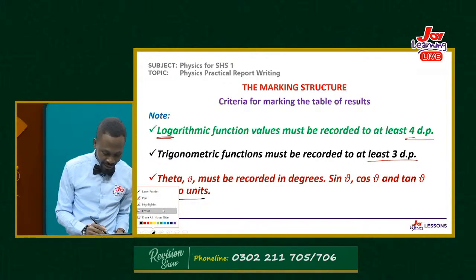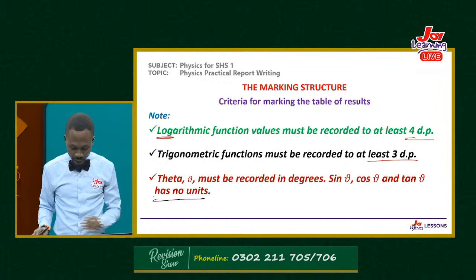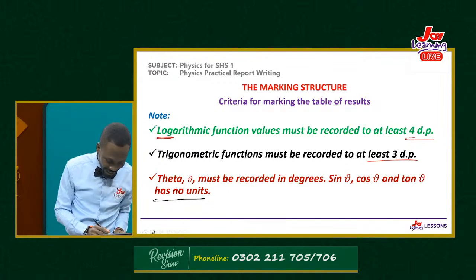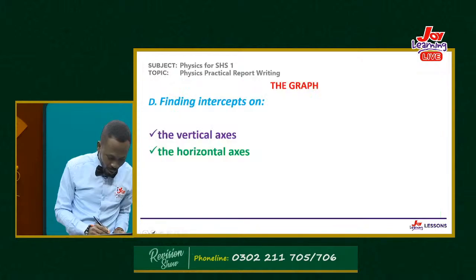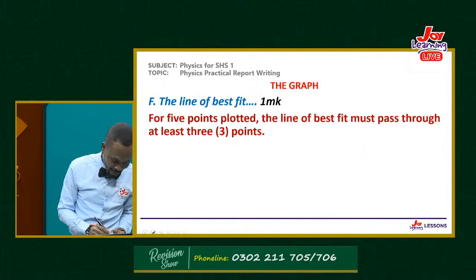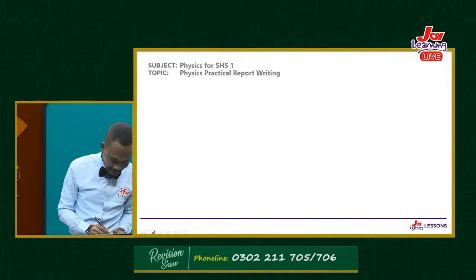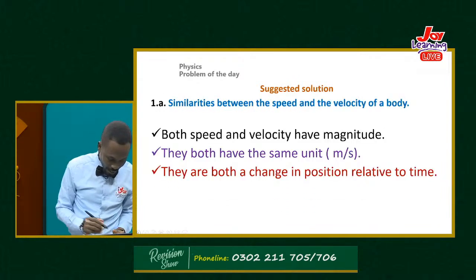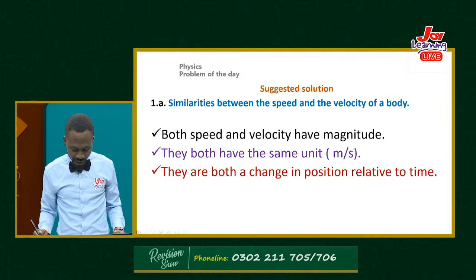We have a caller on the line. Good evening — may I know your name and where you're calling from? My name is Nelson, calling from Kumasi High School. Are you ready to answer our question? Nelson says: according to the formula, the force of attraction between two masses is directly proportional to the product of the masses and inversely proportional to the square of the distance between them.